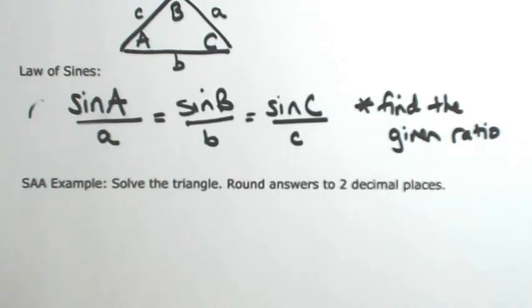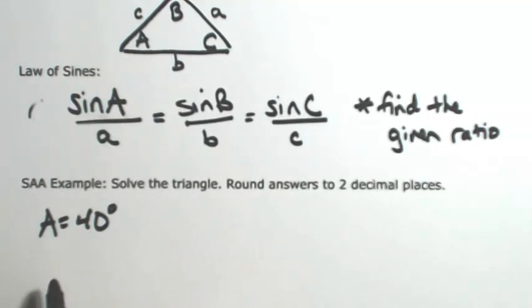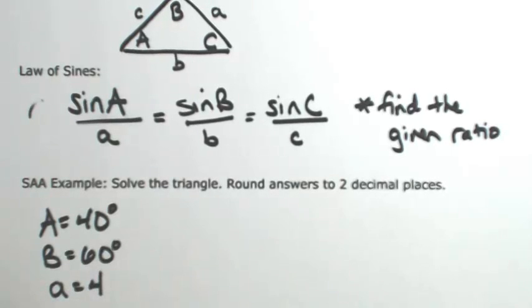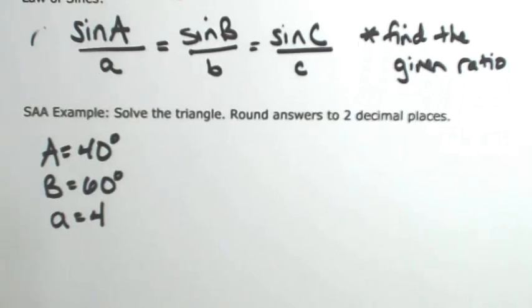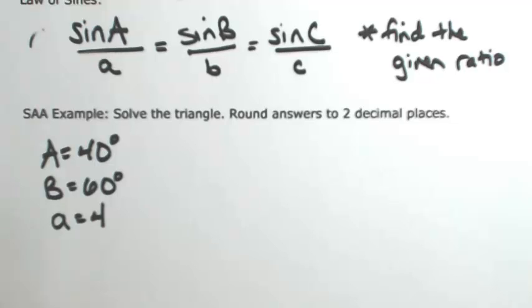Let's look at a case where we have two angles and a side. For this example, let's say we have angle A being 40 degrees, angle B is 60 degrees, and side a being 4. The first thing I notice is that I have an angle with its corresponding side, so the Law of Sines will work here. Let me show you why this is called an SAA example.